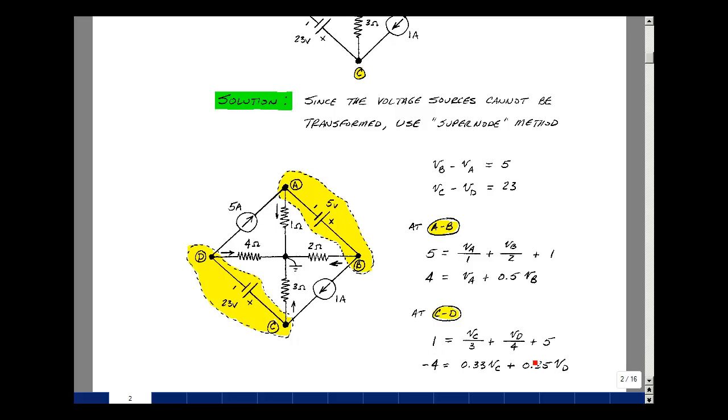So what's entering is equal to what's leaving. Put this on the other side of the equation as minus 5, so I get minus 4, 0.33 times V sub C, and then 0.25 times V sub D.